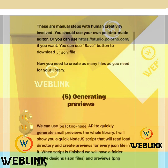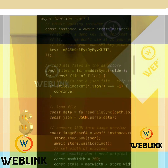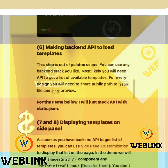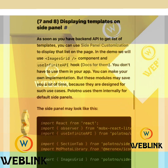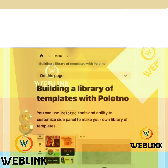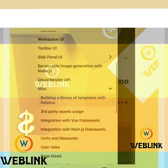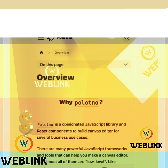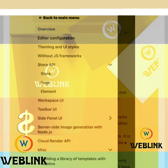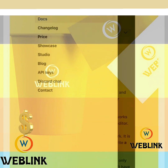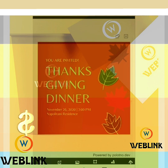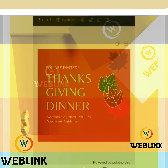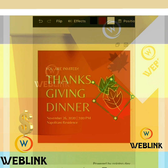Polotno is a large set of JS modules and React components, so you can bootstrap a working version in a day. It has all the features for building rich design tools: selection, text styles, image filters, undo and redo, smart grouping, and much more. This website hides as much complexity from you as possible.